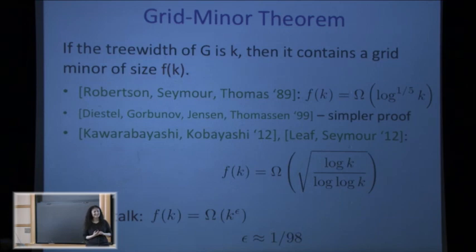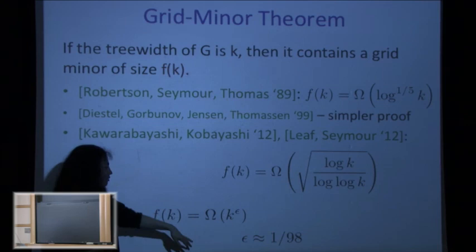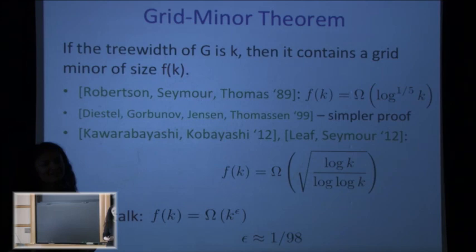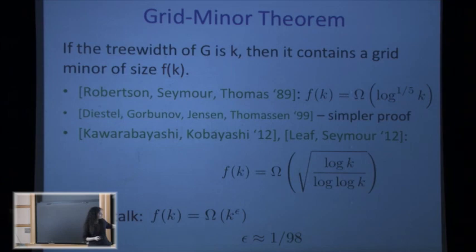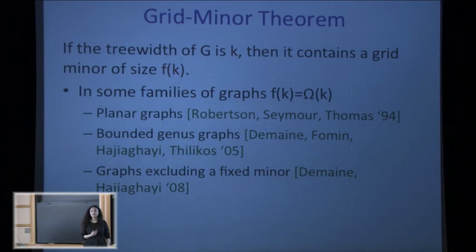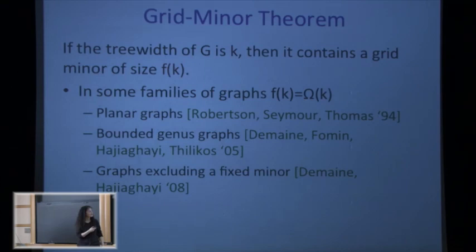In this talk we show that you can make f(k) polynomial in k — that's the good news. The bad news is the polynomial is still kind of tiny, but we are trying to improve it. We also give an efficient algorithm to build the grid minor, and the algorithm is polynomial in both n and k, so we don't assume k is a constant. Additionally, for some families of graphs — planar graphs, bounded-genus graphs, and graphs excluding a fixed minor — you can get grid minor size linear in k.